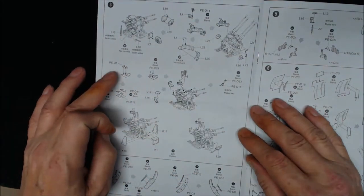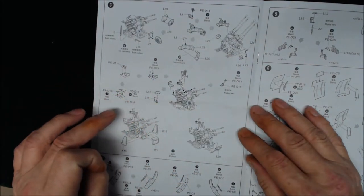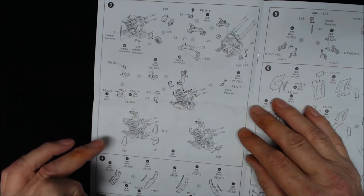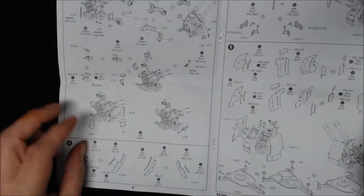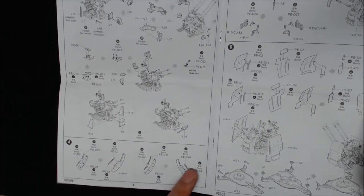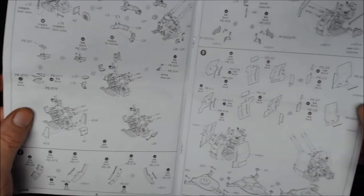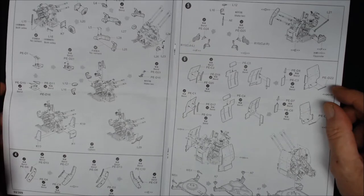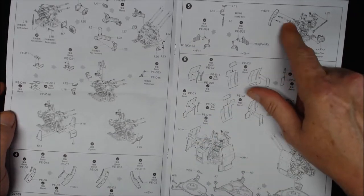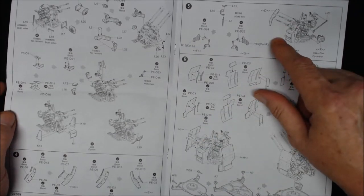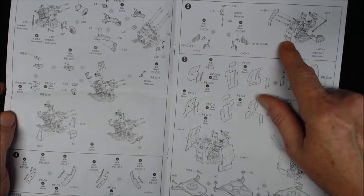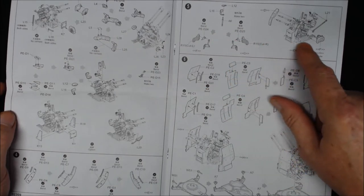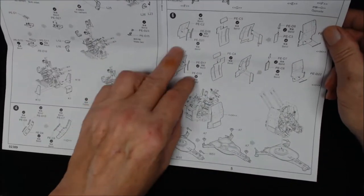Over to page three, a lot going on, a lot of bits and pieces. There's a lot of PE, this is all PE. We've got more PE down the bottom here. So this is going to be quite a lot of PE assembly. The actual front, I don't know what these bits are but we'll find out. It's definitely a seat of some shape. And then we move on, even more PE.